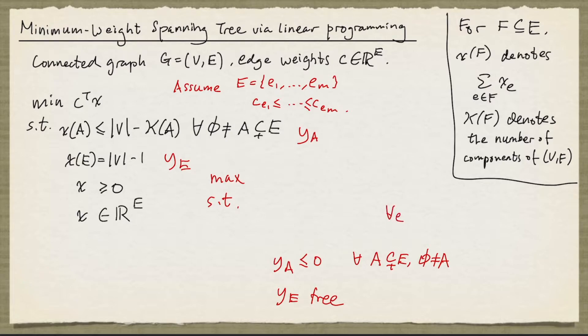Now for each edge e, we get a constraint in the dual. And we see that the coefficient of y_a is 1 whenever a contains the edge e. So we can write down this constraint. And of course, y_e is in this constraint because capital E contains all the edges. And since the primal variables are non-negative, this will be a less than or equal to constraint. And the coefficient of x_e in the objective function is c_e.